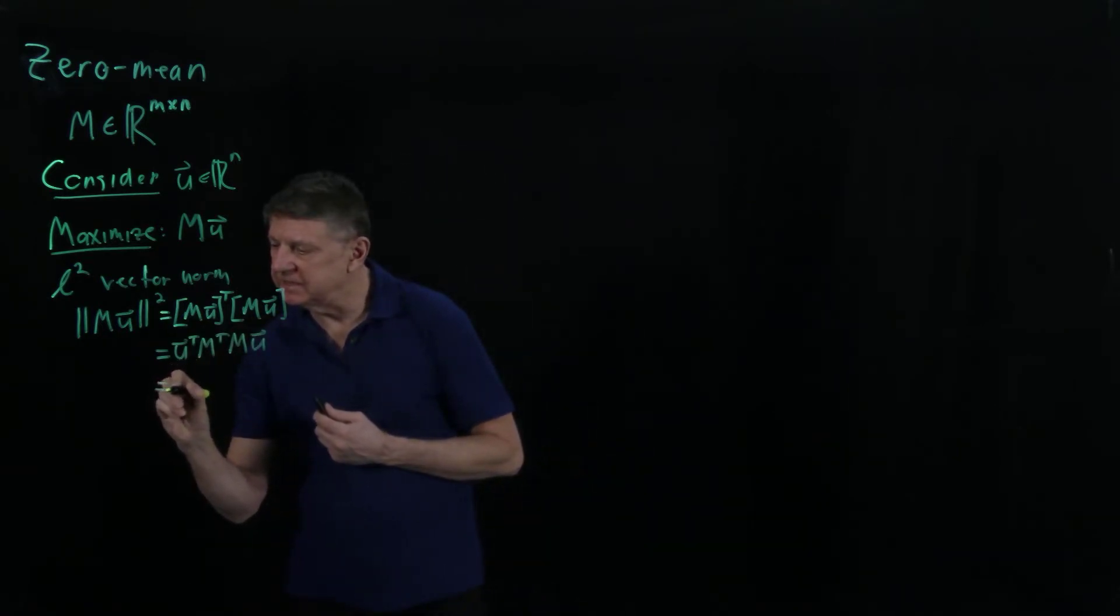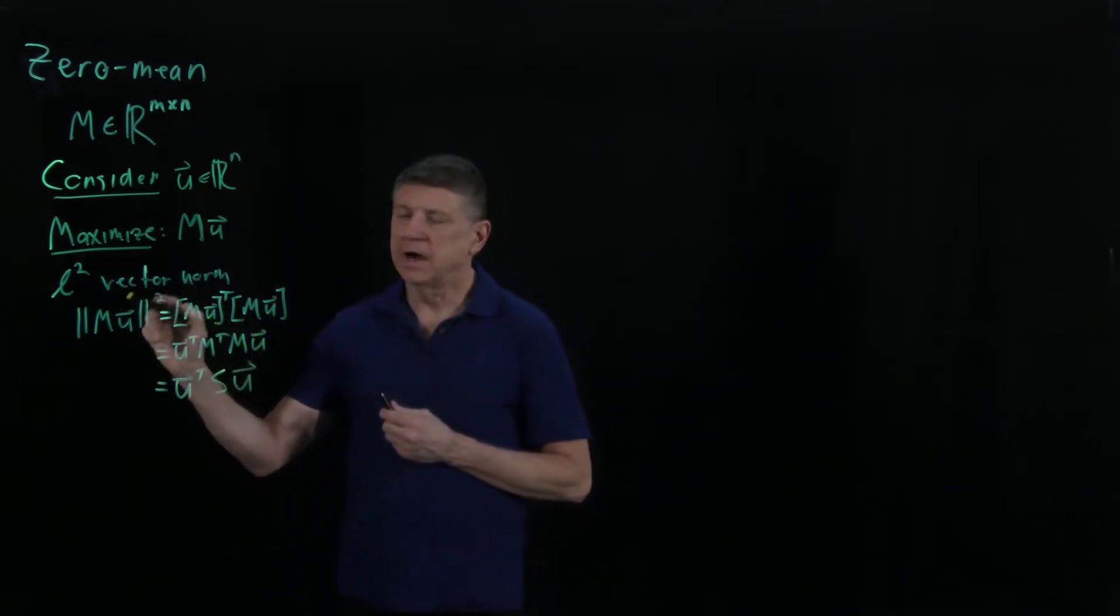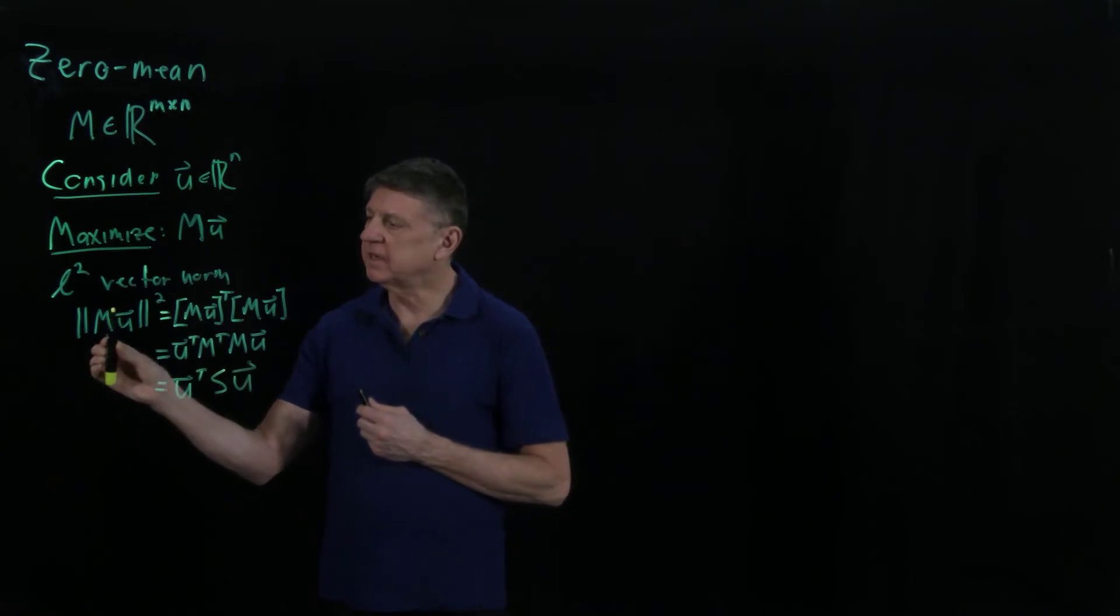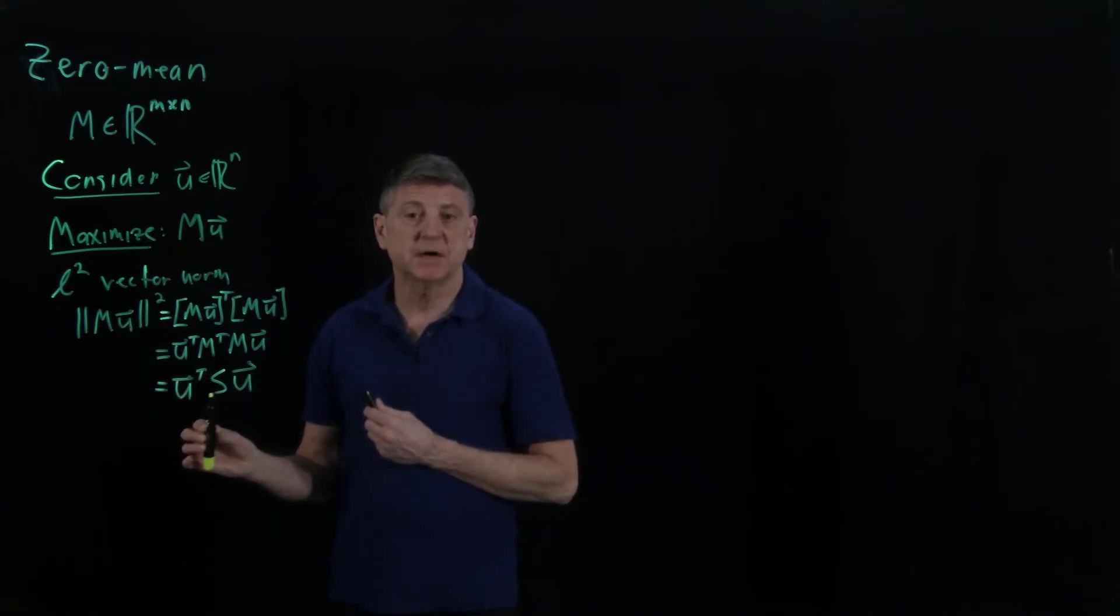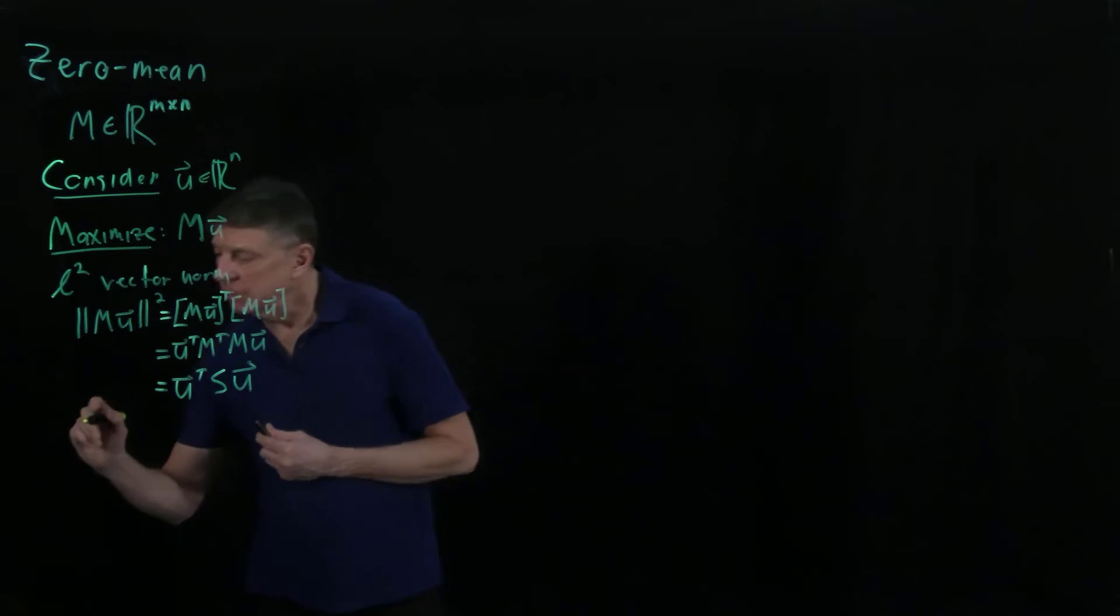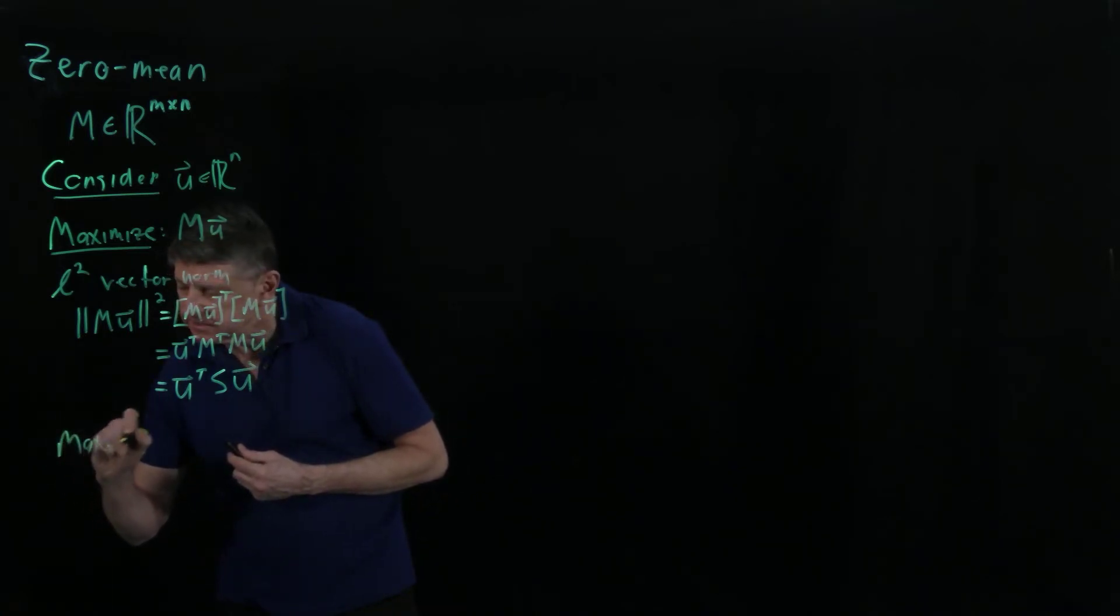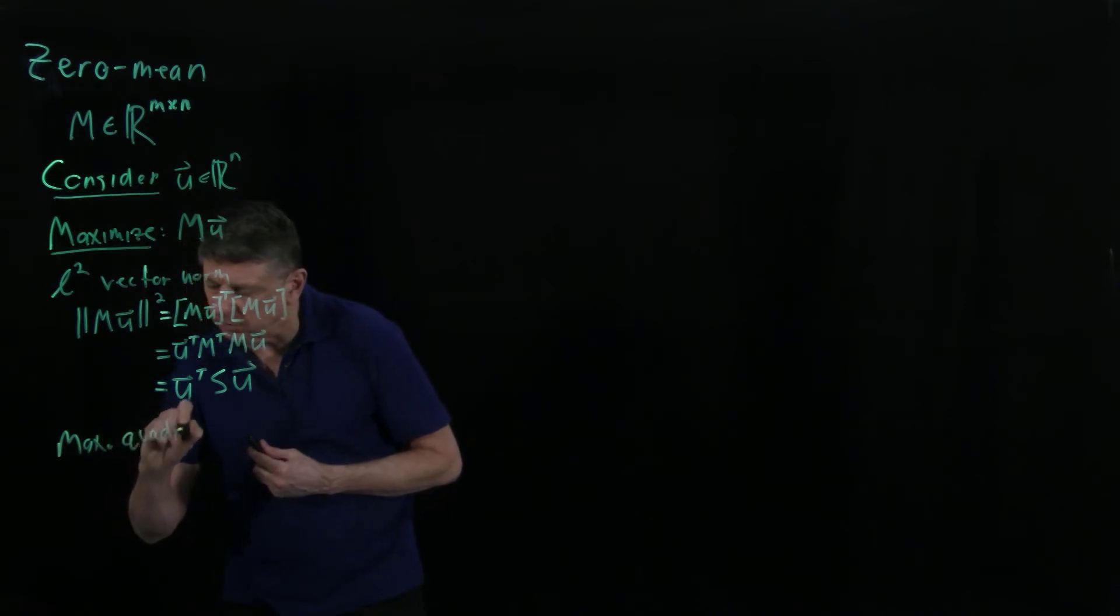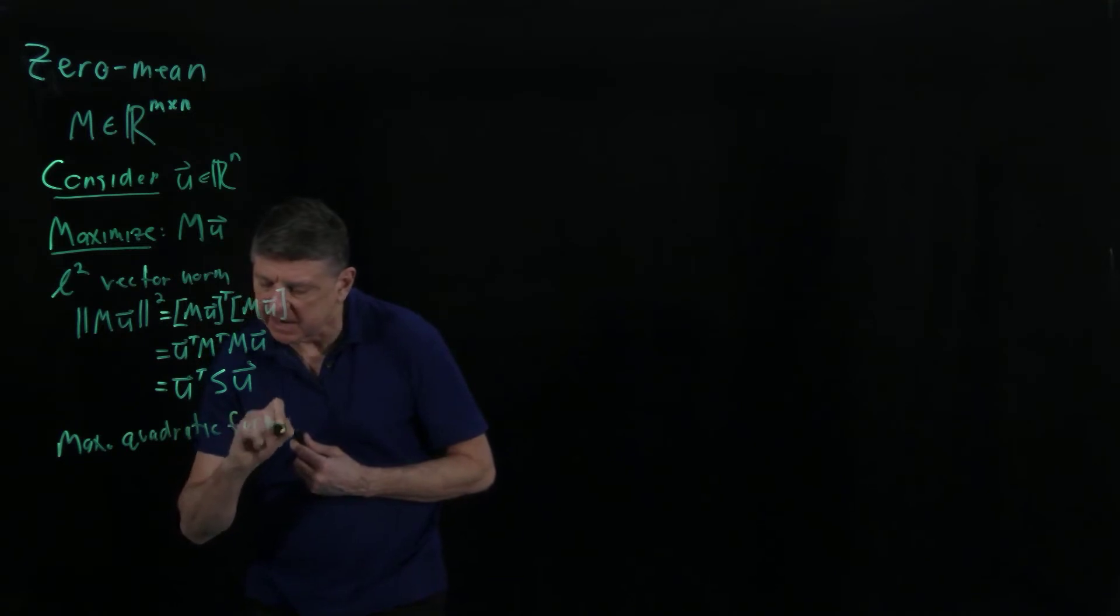So the problem of maximizing the squared norm of the product of the zero mean data and any input vector is the same as trying to maximize the quadratic form. To maximize the quadratic form is our new problem.